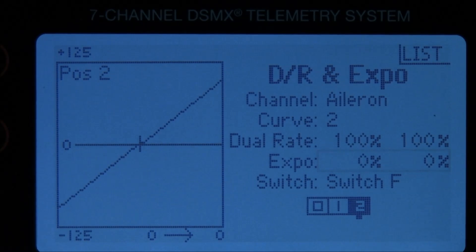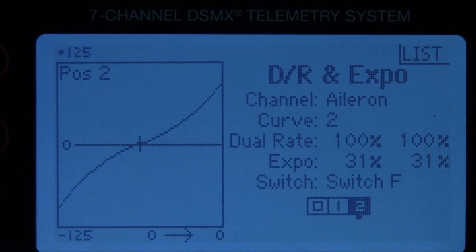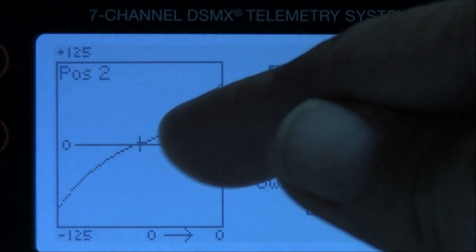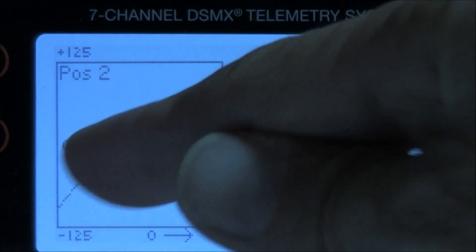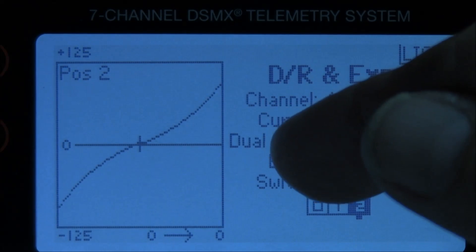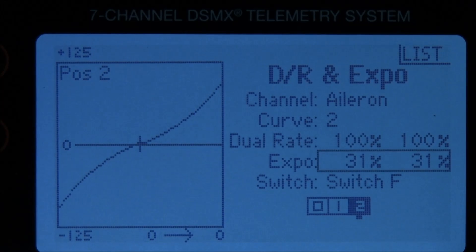Right now the exponential is set at zero. Depress the scroll bar. It's now highlighted and ready to program. Let's add 30. Notice the curve screen over here began a curved wave. The closer this wave is to the center line the softer the response will be around center.